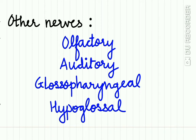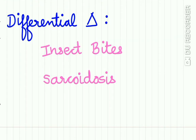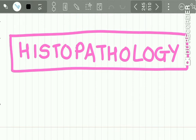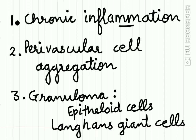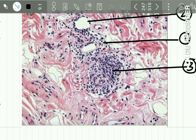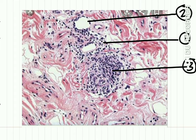Other nerves involved include the olfactory, auditory, glossopharyngeal, and hypoglossal nerves. The differential diagnosis includes insect bites and sarcoidosis. Histopathology shows three features: a chronic inflammatory cell infiltrate, perivascular cell aggregation of lymphocytes and mast cells around blood vessels, and formation of a non-caseating granuloma containing epithelioid cells and Langhans giant cells.